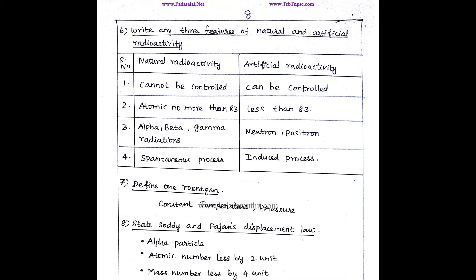Next, atomic number is 83. But artificial is less than 83. Natural is 3 types of radiation: Alpha, Beta, Gamma. We create neutron and positron. This is a spontaneous process. We induce this process.